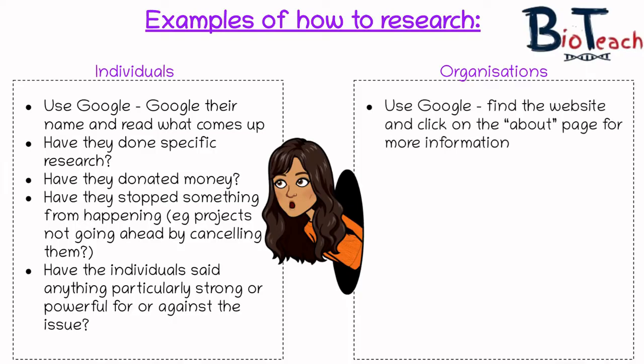With organisations we start off the same way. Google the website and go on to the about page for more information. By giving a quick look at their website we might be able to see if they're private companies or government bodies, and we might even be able to discover where their money comes from and where it goes. Who do they fund? Do they fund research? Do they give money to universities, PhD scientists, or other researchers that will help influence the scientific issue?